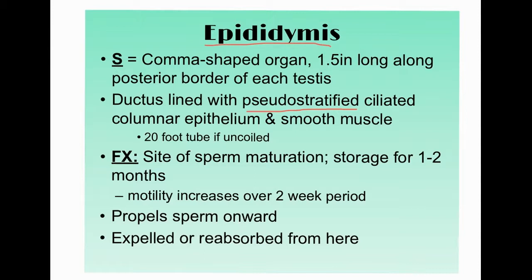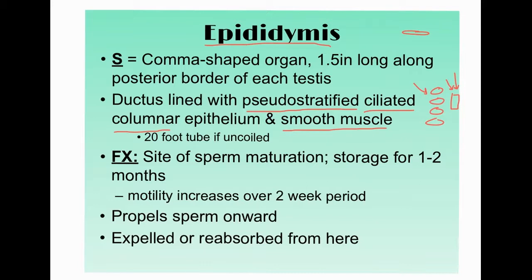Pseudostratified means it looks like a stack of cells but is really only a single line of cells. The cells are ciliated — containing little hair-like structures that move fluids along — and are columnar, not flat like squamous cells. They are composed of smooth muscle, so they are outside voluntary control.